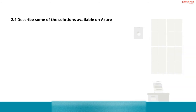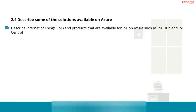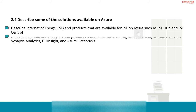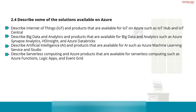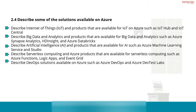Number 4: describe some of the solutions available on Azure, including: Internet of Things (IoT) products such as IoT Hub and IoT Central; big data and analytics products such as Azure Synapse Analytics, HD Insight, and Azure Databricks; artificial intelligence products such as Azure Machine Learning Service and Studio; serverless computing products such as Azure Functions, Logic Apps, and Event Grid; and DevOps solutions such as Azure DevOps and Azure Dev Test Labs.